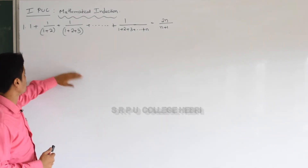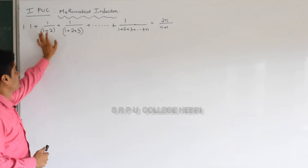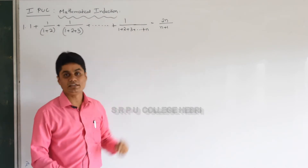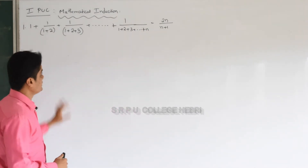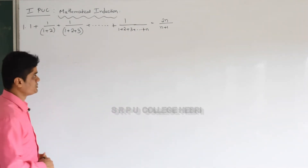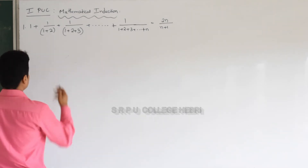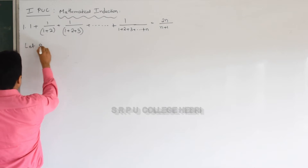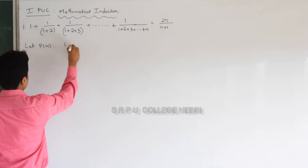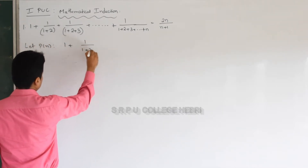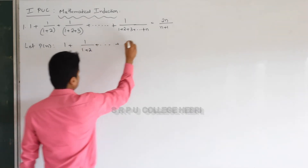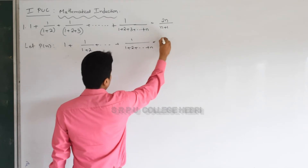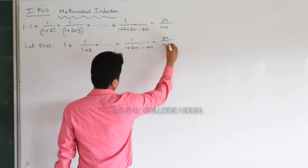Observe carefully. The question is 1 plus 1 by (1 plus 2) plus 1 by (1 plus 2 plus 3) and so on up to 1 by (1 plus 2 plus 3 up to n) equal to 2n by (n plus 1). It looks difficult but it's simple. Take the given problem as P of n. First two terms and the last term equal to 2n by (n plus 1).